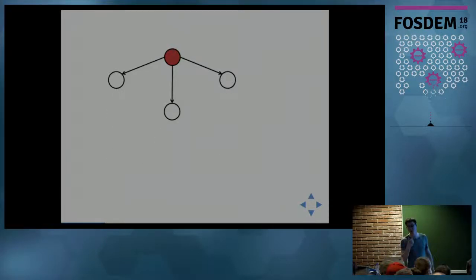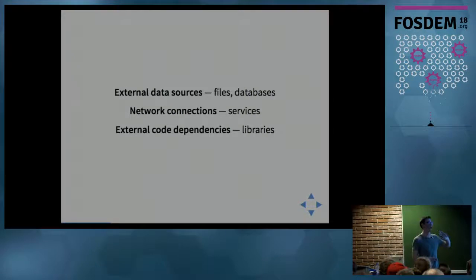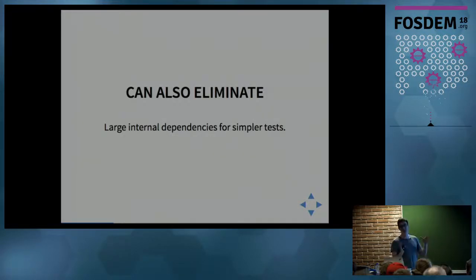We typically eliminate anything that's non-deterministic, that can't be reliably controlled in a unit test - data sources, network connections, potentially libraries that have global state or some horrible library. You can also eliminate large internal dependencies as well. If you've got particularly large complex dependencies that take a long time to set up, you can eliminate those as well.